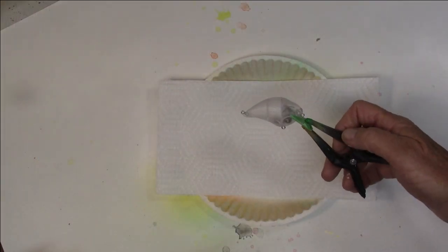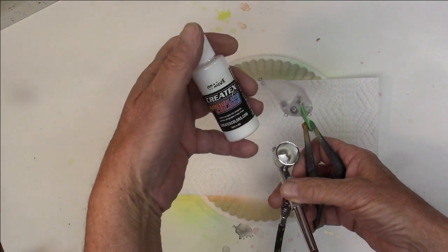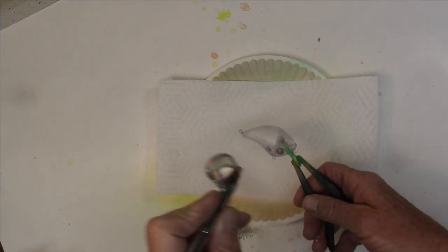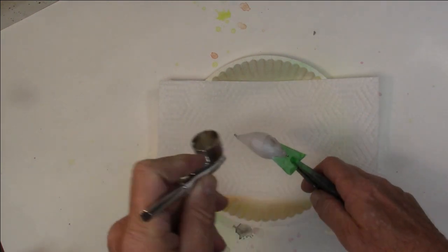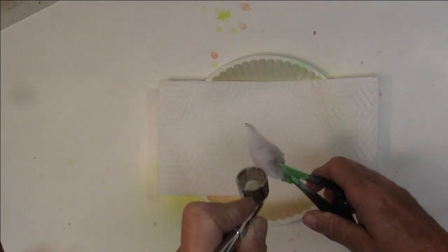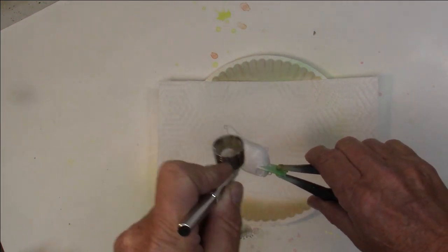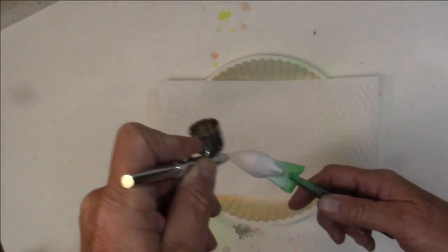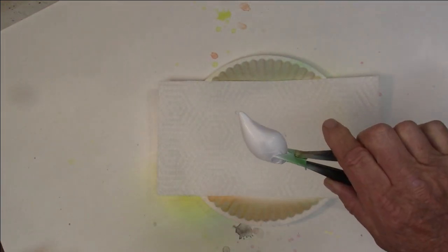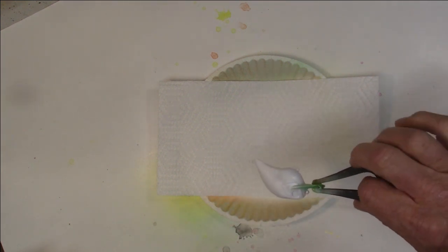Alright, as always, first thing we want to do is put a base coat on. For colors, Createx opaque white. That will be our base coat. Running about 40 pounds of air pressure, maybe a little bit less. Nice even coat to get those colors to come out right. That's all it takes. Now let's move on.